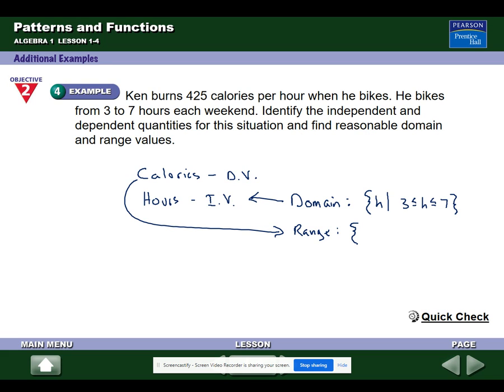But the range will say C for calories. And it's something between three times 425, which is 1275. The variable goes in the middle there. And seven times 425, which is 2975. Because he can bike something between three and seven hours, he's going to burn something between 1275 and 2975 calories.